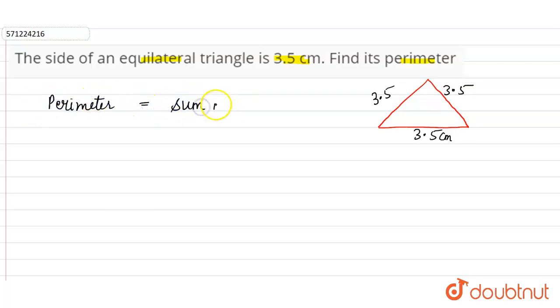Sum of all the sides of the triangle, so sum means 3.5 plus 3.5 plus 3.5 centimeters. So let's add 3.5 plus 3.5 plus 3.5. So 5 plus 5 plus 5 is 15, one carry.